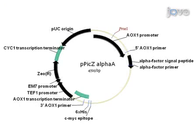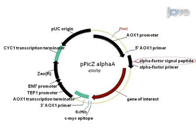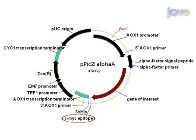The expression of recombinant proteins in the methylotrophic yeast Pichia pastoris requires cloning your gene of interest in frame in a P. pastoris parent vector. In our experiment, we use the vector pPICZalpha A. This vector contains the AOX1 promoter for tightly regulated methanol-induced expression of the gene of interest, the alpha-factor secretion signal for secretion of the recombinant protein, a zeocin resistance gene for selection in both E. coli and Pichia, a C-terminal peptide containing a c-myc epitope, and a polyhistidine tag for detection and purification of the recombinant protein.